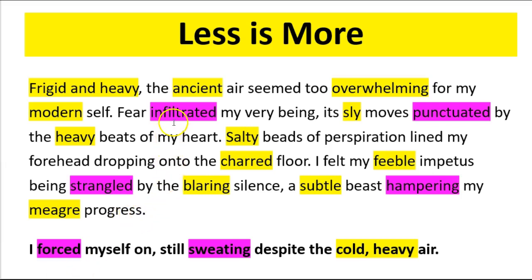Now, the next thing I want to show you is the use of verbs. Hrishikesh has got some brilliant verbs — infiltrated, punctuated, strangled, hampering — really powerful verbs which give a real sense of action. However, these are all verbs given to the environment and not to the narrator, and that makes them less powerful. Whereas my choice of verbs gives a real picture of the narrator. If the narrator is forcing himself on, we know he must be afraid — we don't need to spell that out with the heavy beats of his heart. We know his heartbeat must be raised because he's forcing himself and also sweating. Less is more because these telling details help us work out exactly what's going on to the narrator physically and mentally.